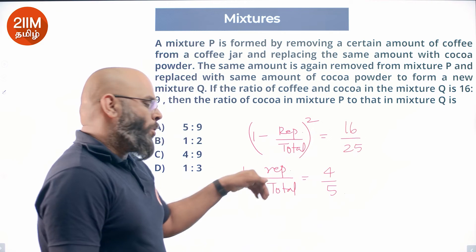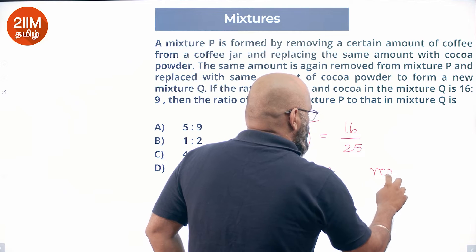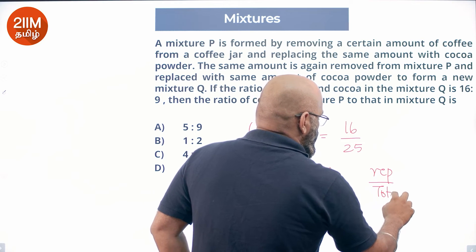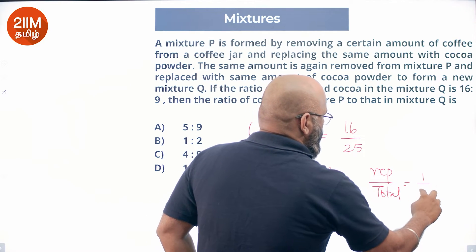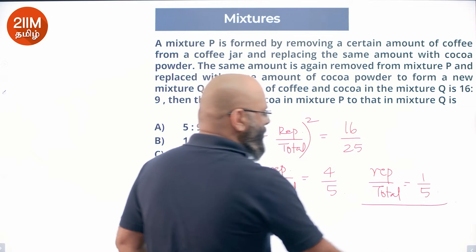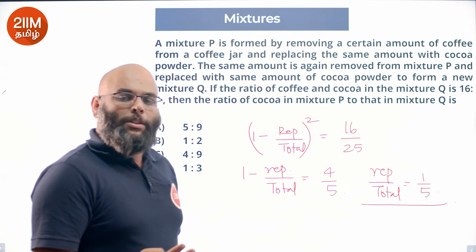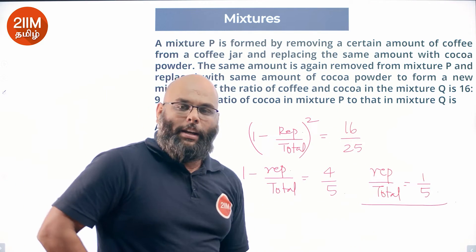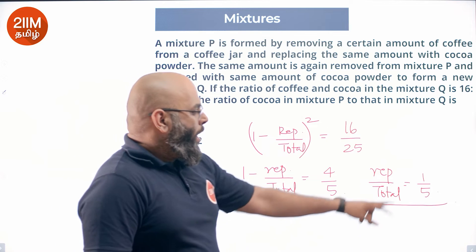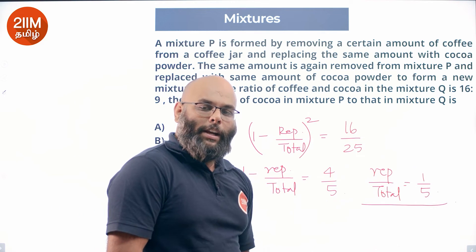So, the replaced amount by total is equal to 1 by 5. Now, 20 percentage of what we have done.